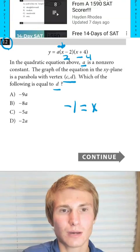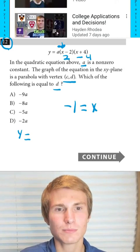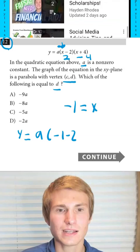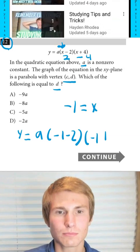what I do is I plug that into my equation up here. So now I'm going to have my y-coordinate of my vertex is going to equal a times negative 1 minus 2 times negative 1 plus 4.